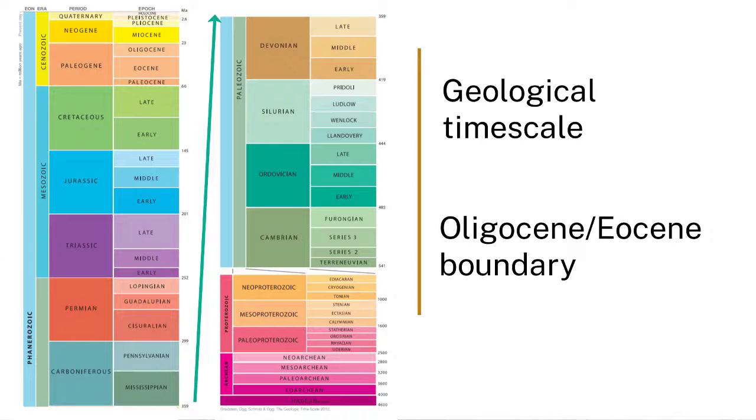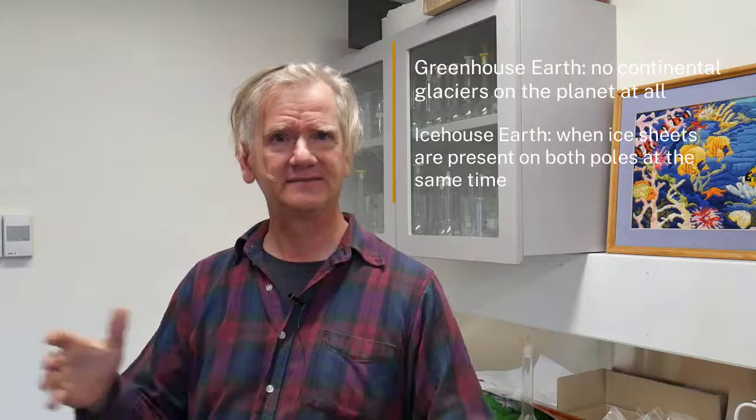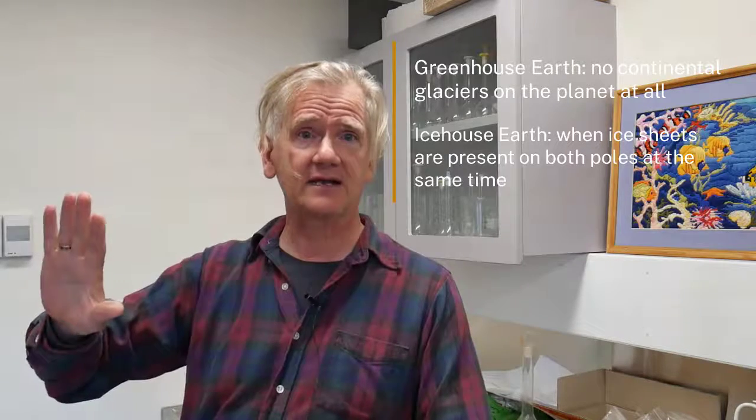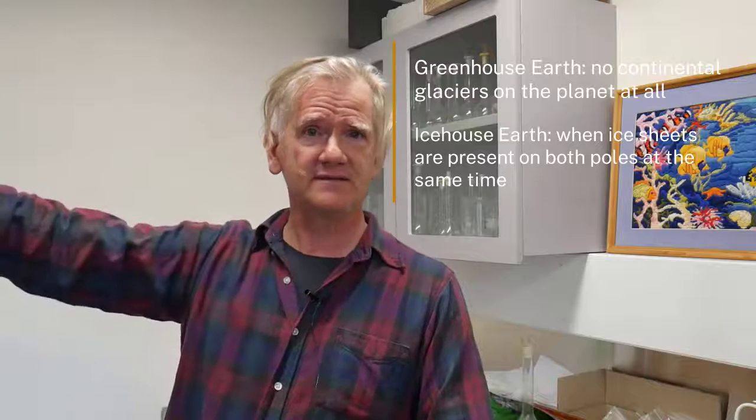And so those of us that think about big glacial, interglacial greenhouse versus ice house climate transitions, this is a big one because that's when Antarctica first got glaciated. If you go back to 41 million years ago, Antarctica is not glaciated. If you get to 39 million years ago, Antarctica is glaciated. So that's a big transition.